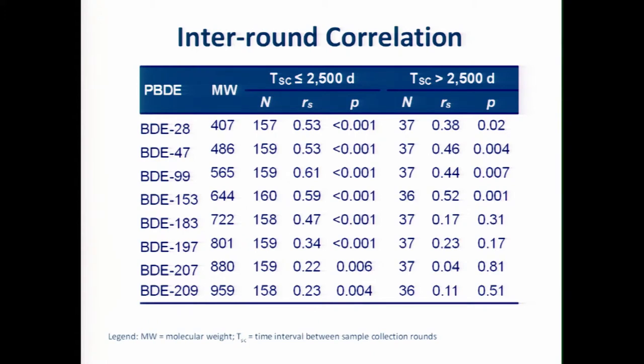That's the figure version of this table. The table, in this case, is broken up into two categories based on the interval between sampling rounds. On the left is the interval between sampling rounds when it's shorter, less than 2,500 days. And on the right is the time interval between sampling rounds when that interval is longer, longer than 2,500 days. You can see that for these major PBDEs, the correlation between the two sampling rounds is better when we have a shorter period of time between the sampling interval.